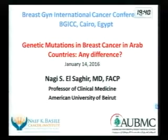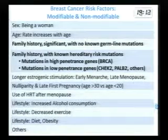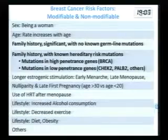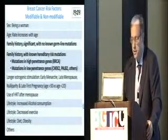As an introduction, risk factors are either modifiable or non-modifiable. The non-modifiable are well known: being a woman, the rate increases with age, family history — either with a known mutation or with no known mutations. Family history with no known hereditary risk mutations could be in the high-penetrant genes, the BRCA, or the other low-penetrant genes.